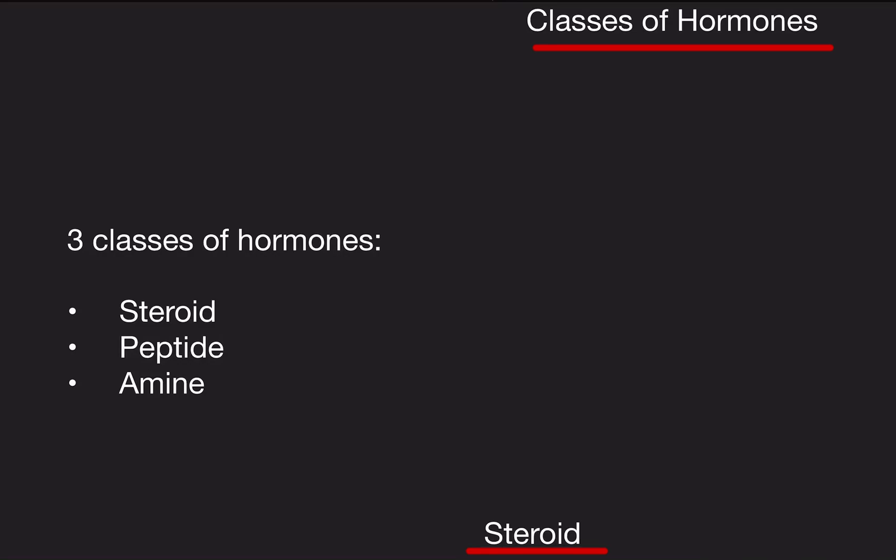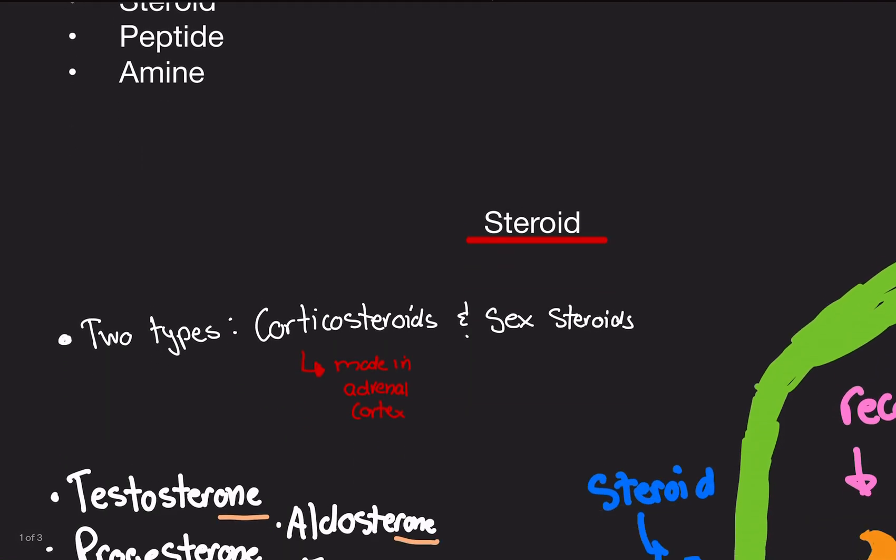Welcome back. Today we're doing classes of hormones. In physiology, we're going to be talking about three types of hormones or three classes of hormones. There are steroid hormones, peptide hormones, and amine hormones. We're going to be doing steroid hormones first.